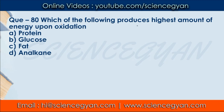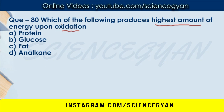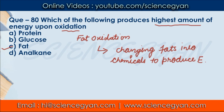Question number 80: Which of the following produces the highest amount of energy upon oxidation? Four options are given. The correct answer is fat. Fat produces the highest energy upon oxidation. Simply put, fat oxidation is the process by which the body converts fat into chemicals from which we get energy. Fat also acts as an energy store in the body.